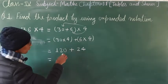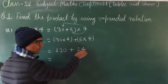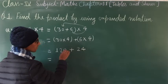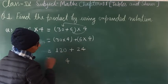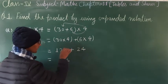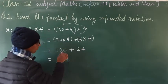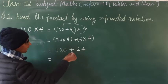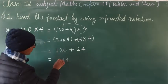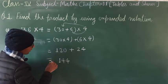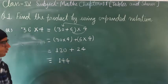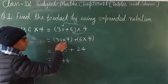Now we add: ones place is 4 and ones place is 0, so 4 + 0 = 4. Tens place is 2 and tens place is 2, so 2 + 2 = 4. Hundreds place is 1, so the answer is 144. So 36 × 4 = 144.